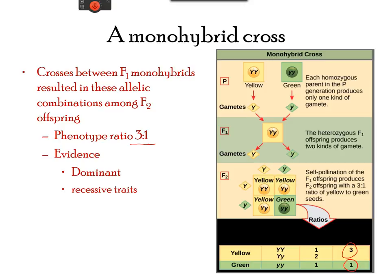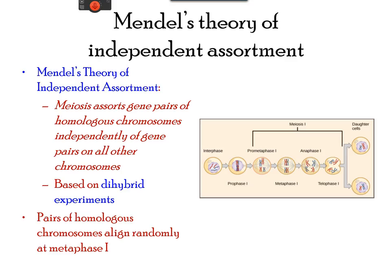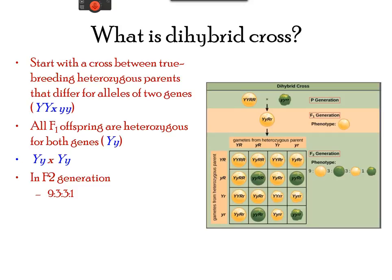Mendel also explained that genes do not influence each other with regard to the sorting of alleles within gametes. This can be explained through his theory of independent assortment. As seen from the image of meiosis, one homologous chromosome segregates independently, meaning that whether a trait comes from a father or mother cannot be dictated. A cross between two true breeding parents that differ for alleles of two genes results in a different ratio. The offspring of a cross between YYRR and yyrr results in four different gamete combinations.